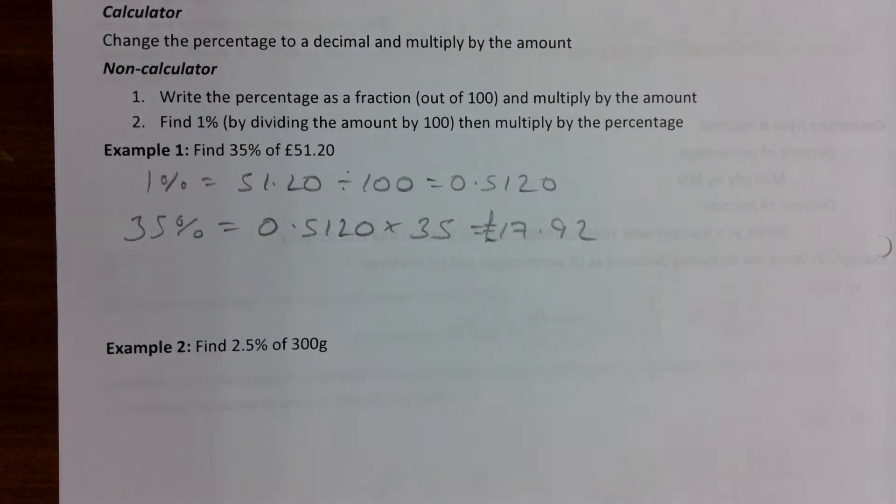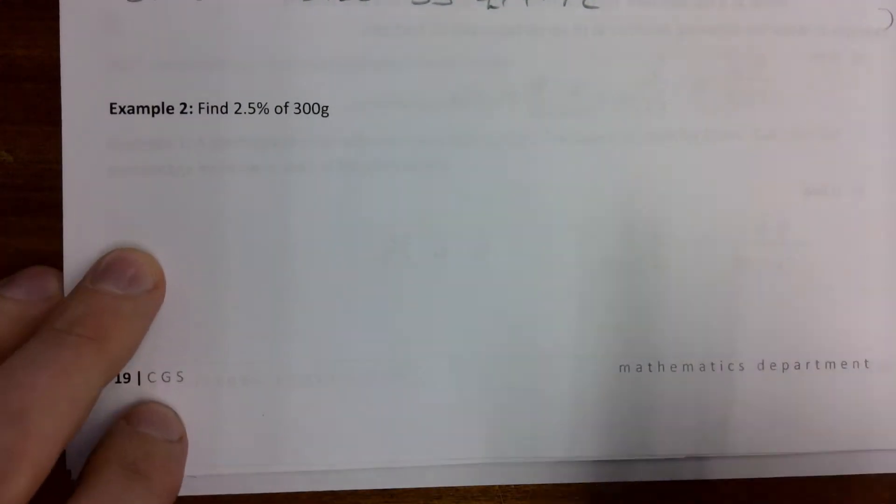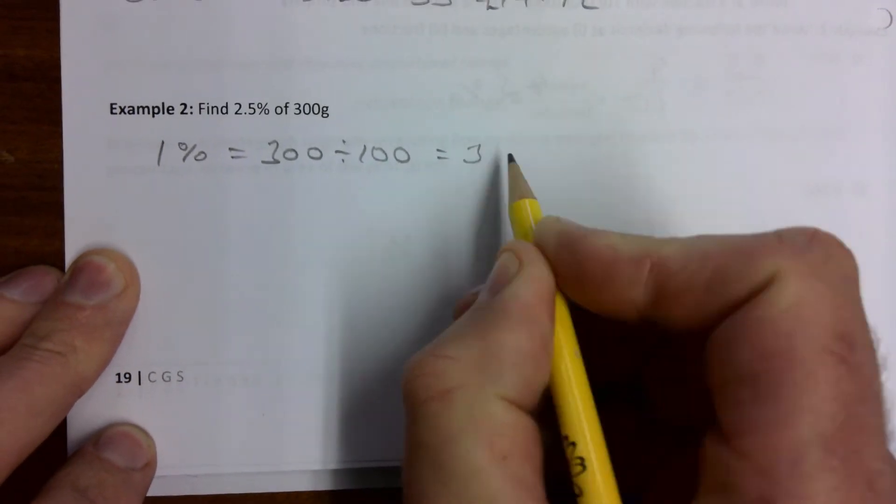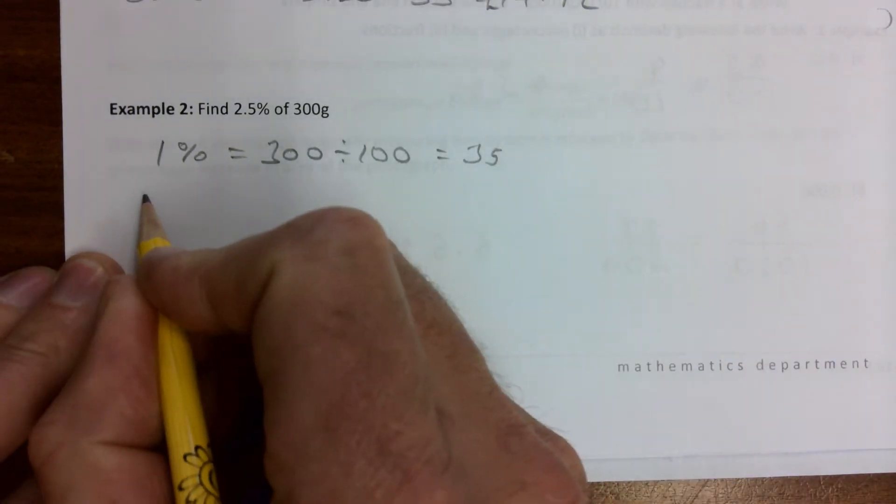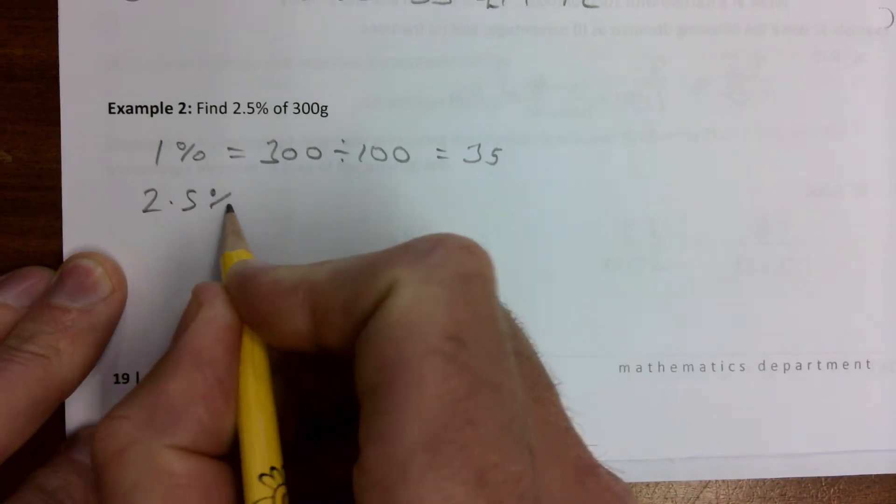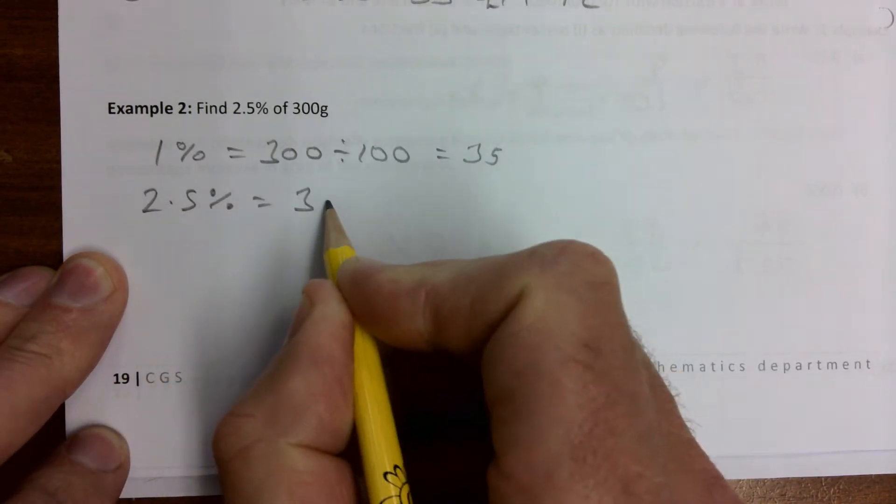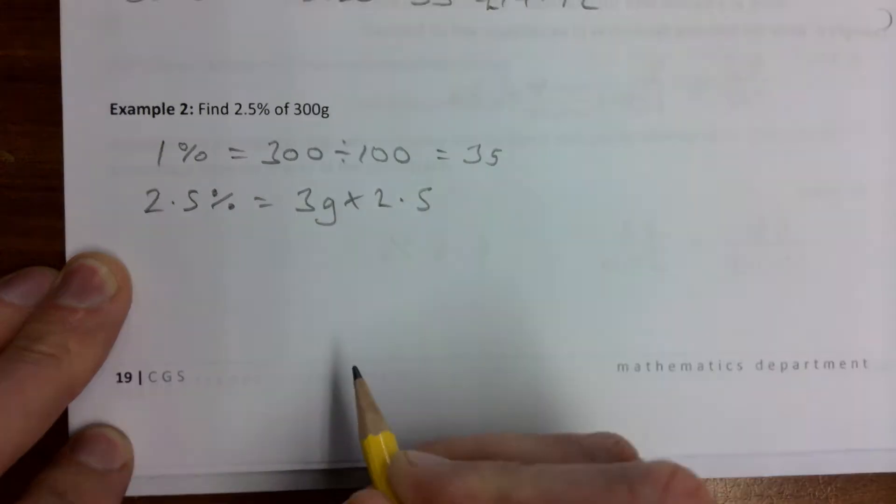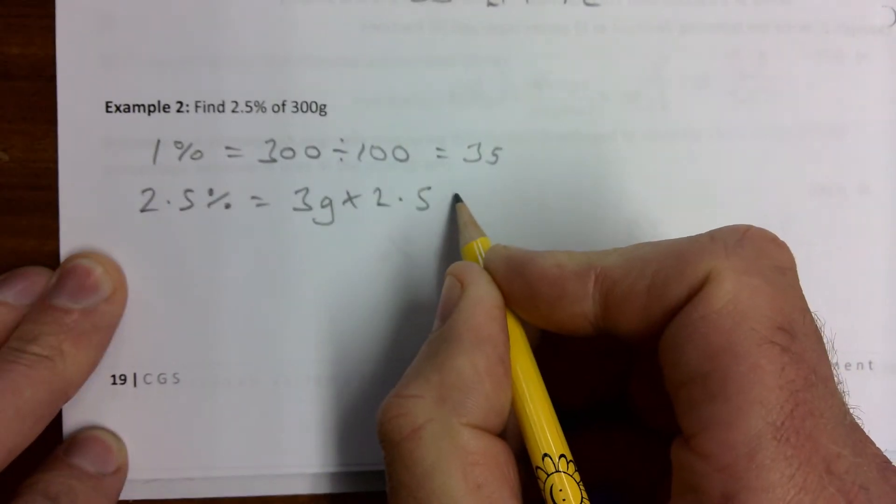Next, in example 2 we find 2.5% of 300 grams. So again I would find 1%. It's equal to 300 divided by 100 and it gives us 3 grams. Then 2.5% is equal to 3 grams multiplied by 2.5.